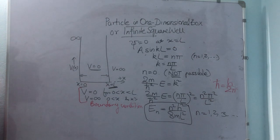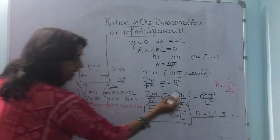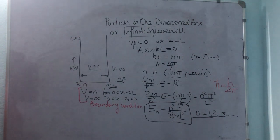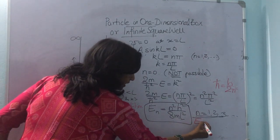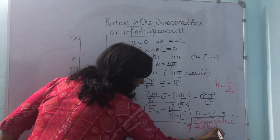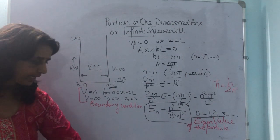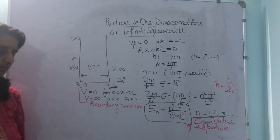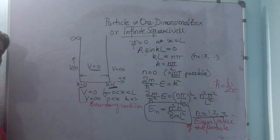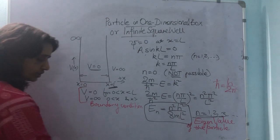Inside the infinite square well, the particle cannot have an arbitrary energy — it can only have certain discrete energies corresponding to n equal to 1, 2, 3, etc. Each permitted energy is called an eigenvalue of the particle. The integer n that specifies an energy level is called the quantum number. The wave functions corresponding to each eigenvalue are called eigenfunctions.